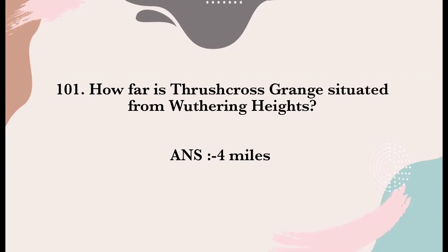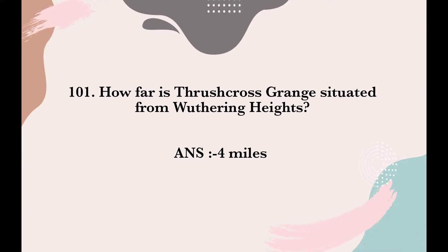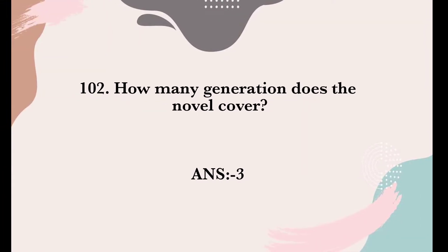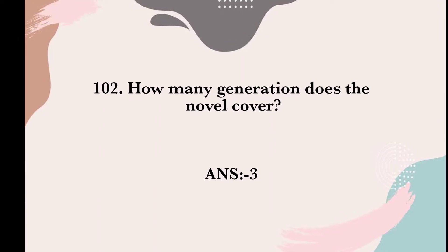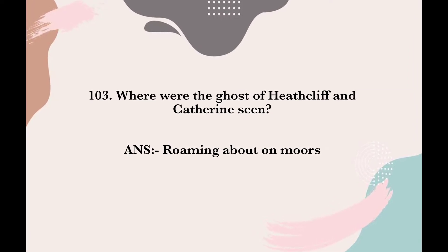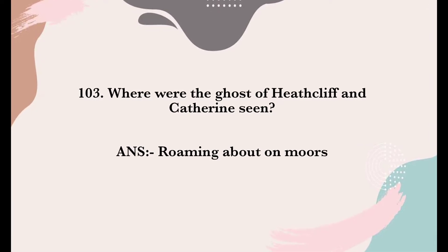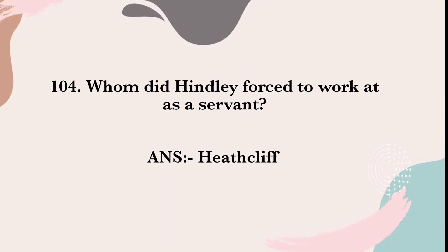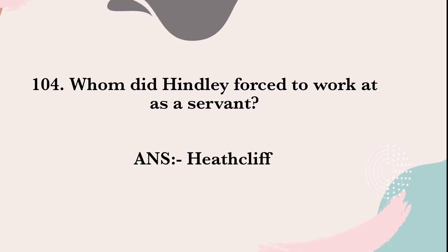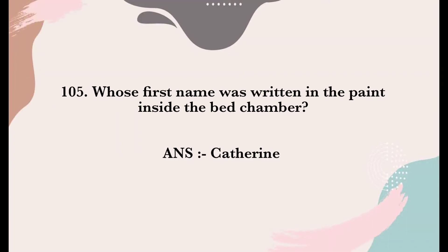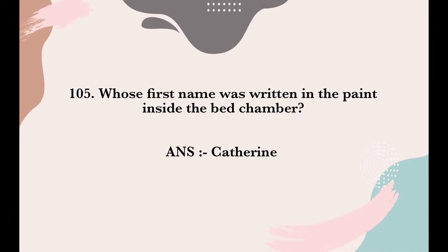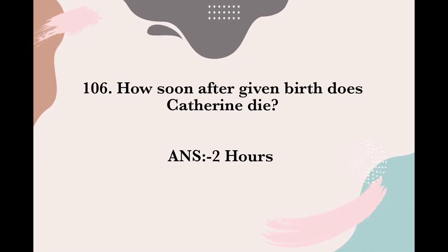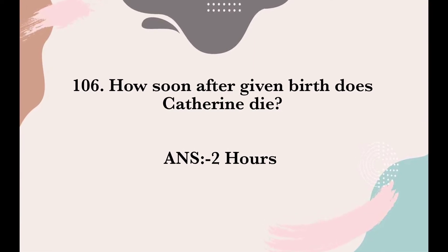How far is Thrushcross Grange situated from Wuthering Heights? Answer: 4 miles. How many generations does the novel cover? Answer: 3 generations. Where were the ghosts of Heathcliff and Catherine seen? Answer: Roaming about on the moor. Whom did Hindley force to work as a servant? Answer: Heathcliff. Whose first name was written in paint inside the bedchamber? Answer: Catherine. How soon after giving birth does Catherine die? Answer: 2 hours.